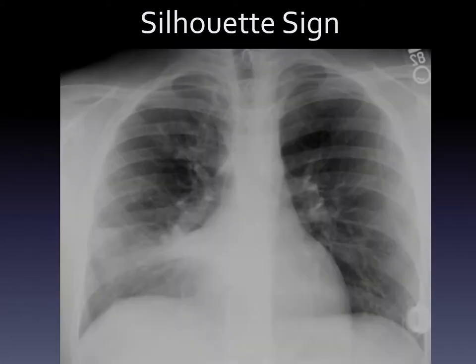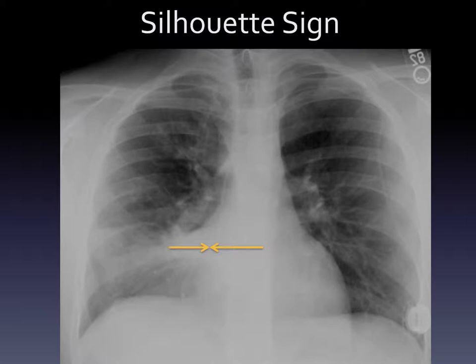This concept — the silhouette sign, where we lose that edge — is discussed in pneumonias pretty frequently. Notice here, we have increased opacity, increased whiteness, in the bottom of the right lung. We can't actually see the edge of it near the heart, and that is because this opacity, which is a pneumonia, has the same density as the heart — meaning they're touching.